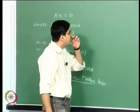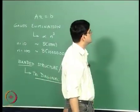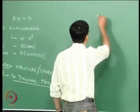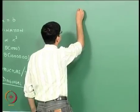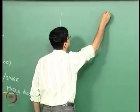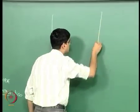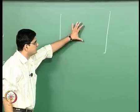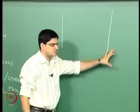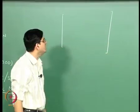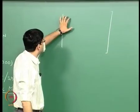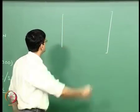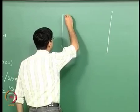The tri-diagonal matrix structure is of the following form. In the tri-diagonal structure, the diagonal elements may be non-zero.